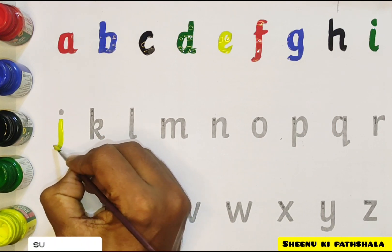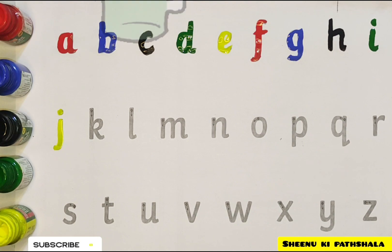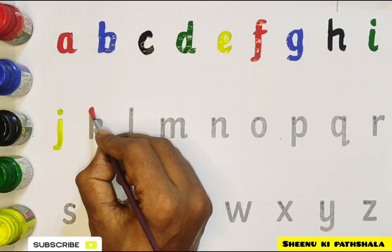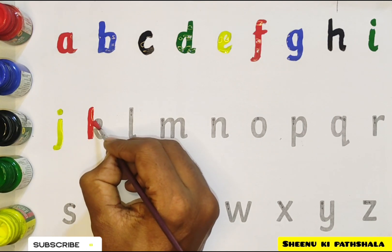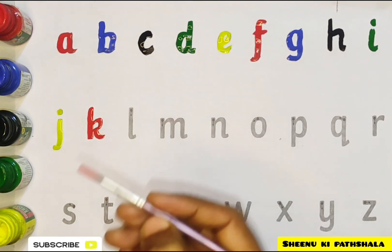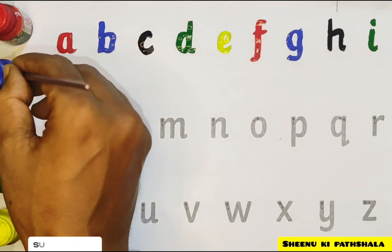J for jug, red color. K for king, blue color.